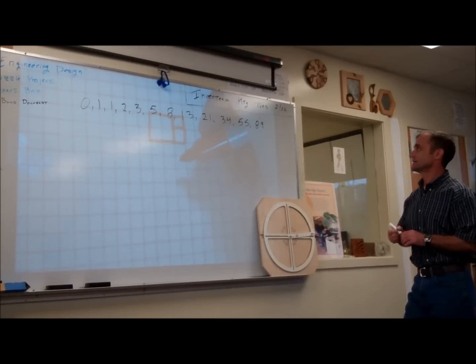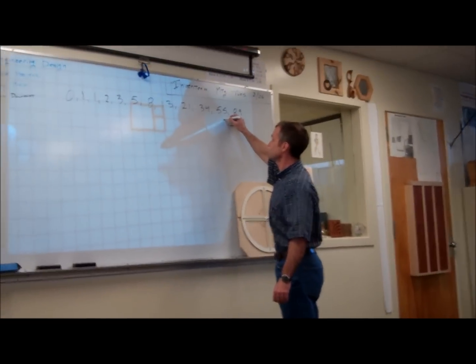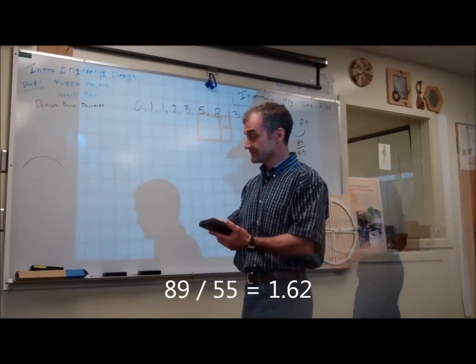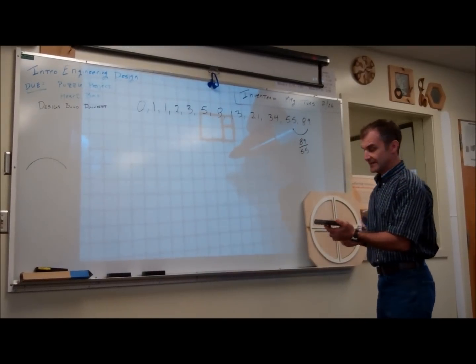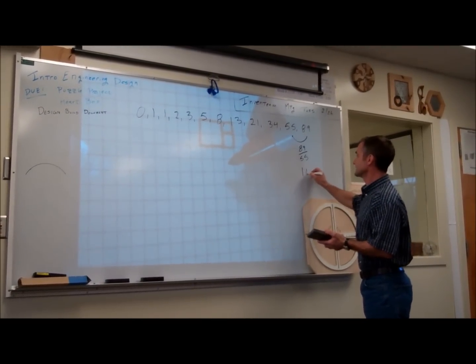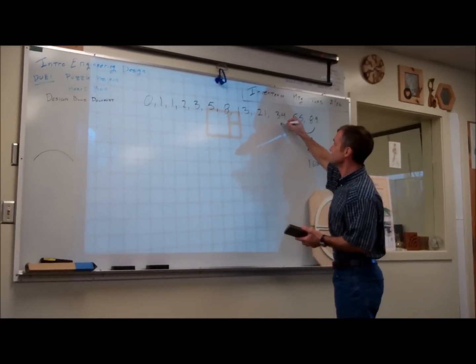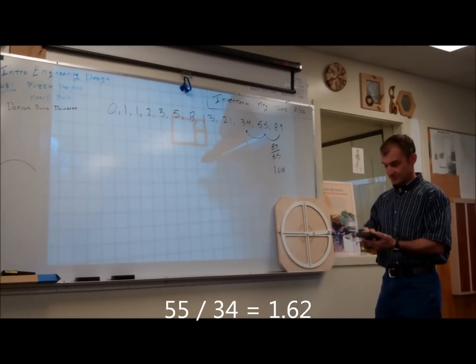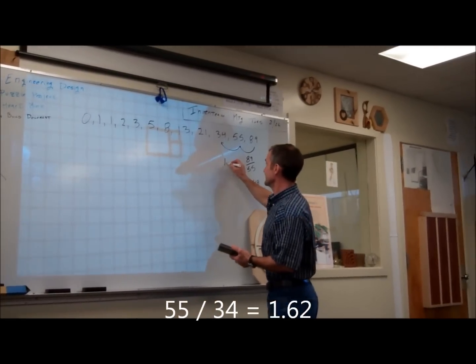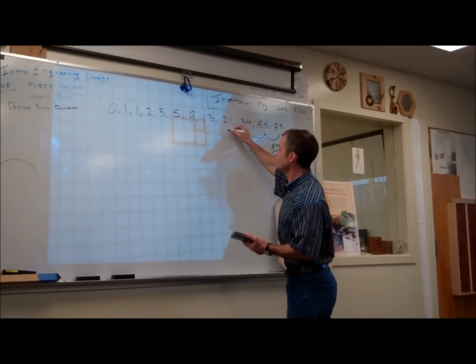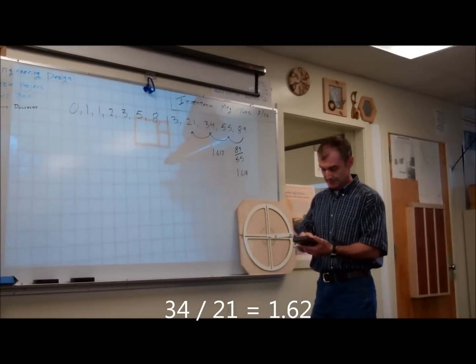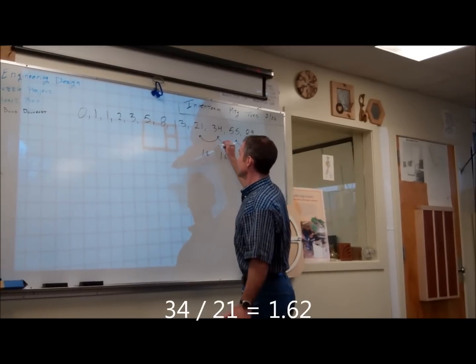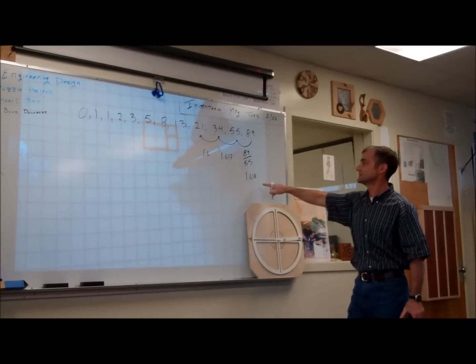But what's really cool about this is if you take this number and divide it by this number, so if I do eighty-nine divided by fifty-five, I get one point six one eight. If I do fifty-five divided by thirty-four, I get one point six one eight, actually one seven. If I do thirty-four divided by twenty-one, I get a pretty similar ratio. And the further I go on, it approaches this number every time.